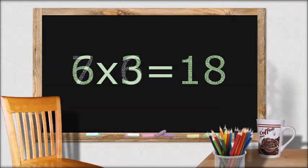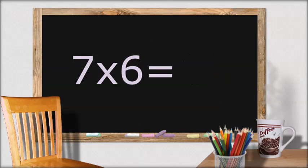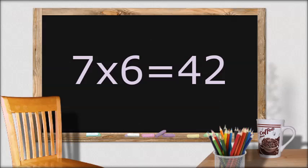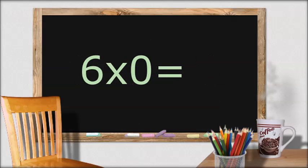7 times 6 equals... 42. 6 times 0 equals... 0.